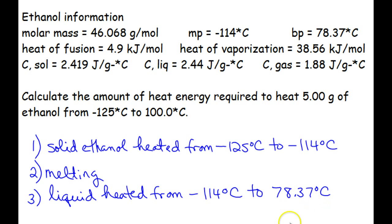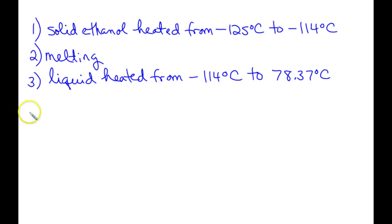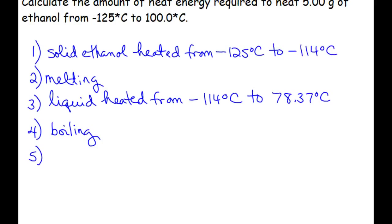Once we've hit that temperature, then we have our next phase change, which would be boiling or vaporization. But we didn't stop at 78.37 degrees Celsius. Our problem says to calculate to 100 degrees Celsius. So now we have the gas that's going to be heated from 78.37 degrees Celsius to the final temperature of 100 degrees Celsius.